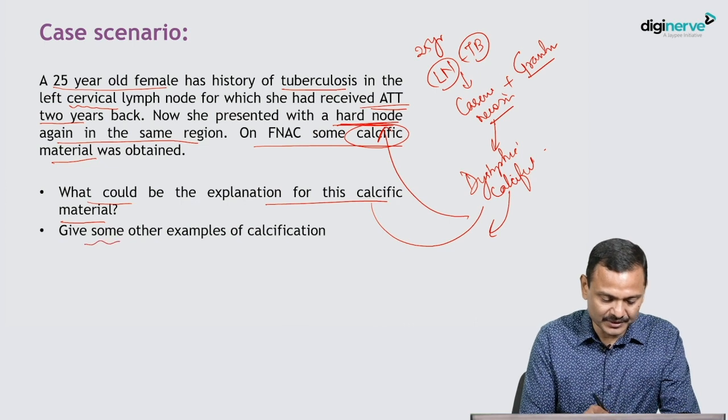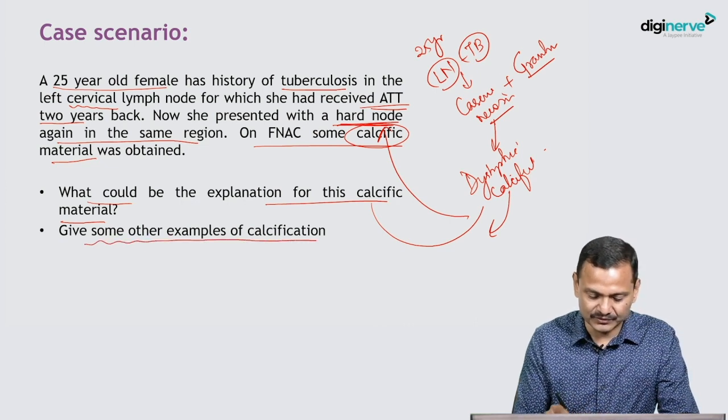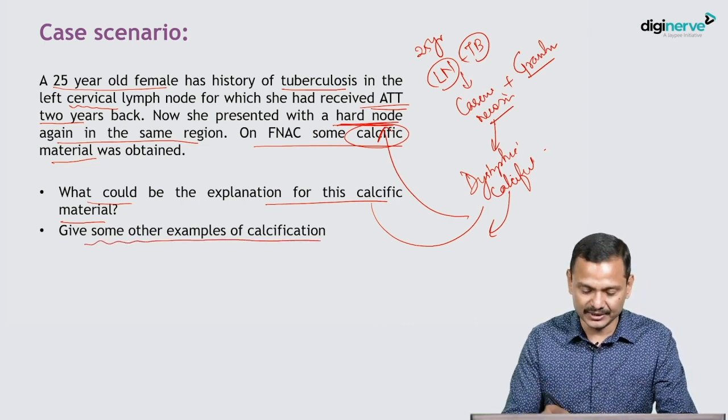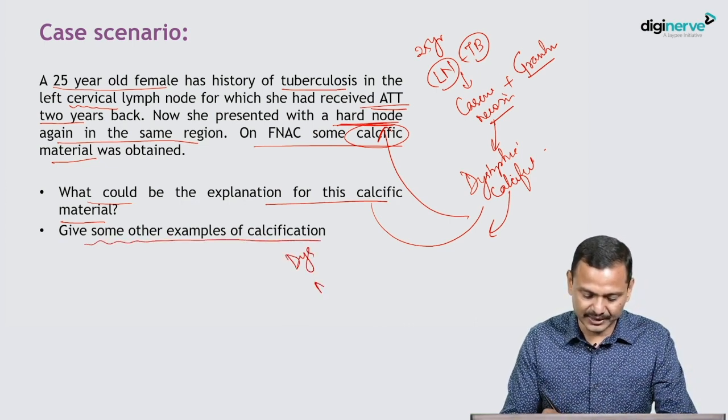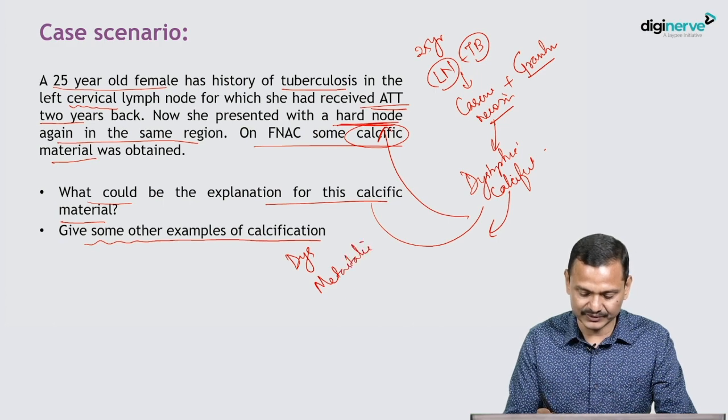Give some other examples of calcification. One is dystrophic, the other is metastatic. Details we will discuss.